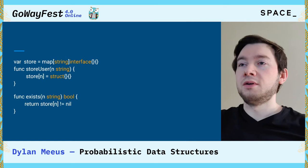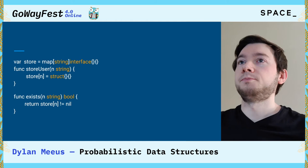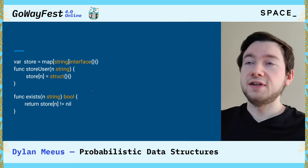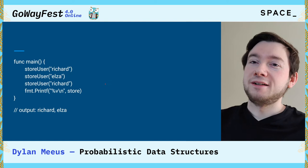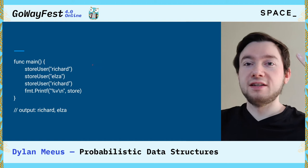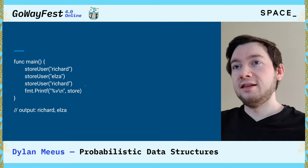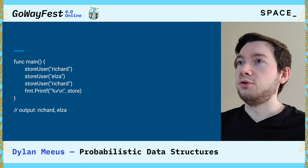If it is nil, then you know the value has not been taken yet and it's not in the map. This works fine for smaller set-like things, until you restart your Go program because it's in memory. You can see that we store three values: Richard, Elza, and Richard again. In the end, when we print the output, there's only two values. So it acts exactly like we would expect a set to act — every element is unique.